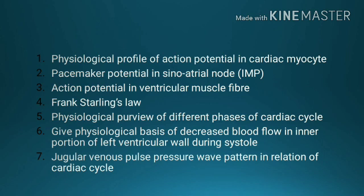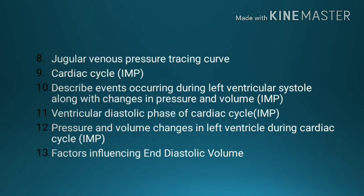Number 6, give physiological basis of decreased blood flow in the inner portion of the left ventricular wall during systole. Number 7, jugular venous pulse pressure wave pattern in relation to the cardiac cycle. Number 8, jugular venous pressure tracing curve. Number 9, cardiac cycle. Number 10, describe events occurring during left ventricular systole along with changes in pressure and volume.